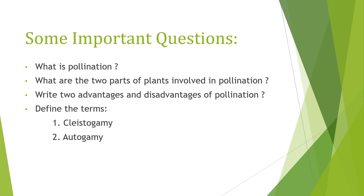Now, some important questions: What is pollination? What are the two parts of plants involved in pollination? Write two advantages and disadvantages of pollination. Define the terms cleistogamy and autogamy. I hope you have understood what we have learned today.